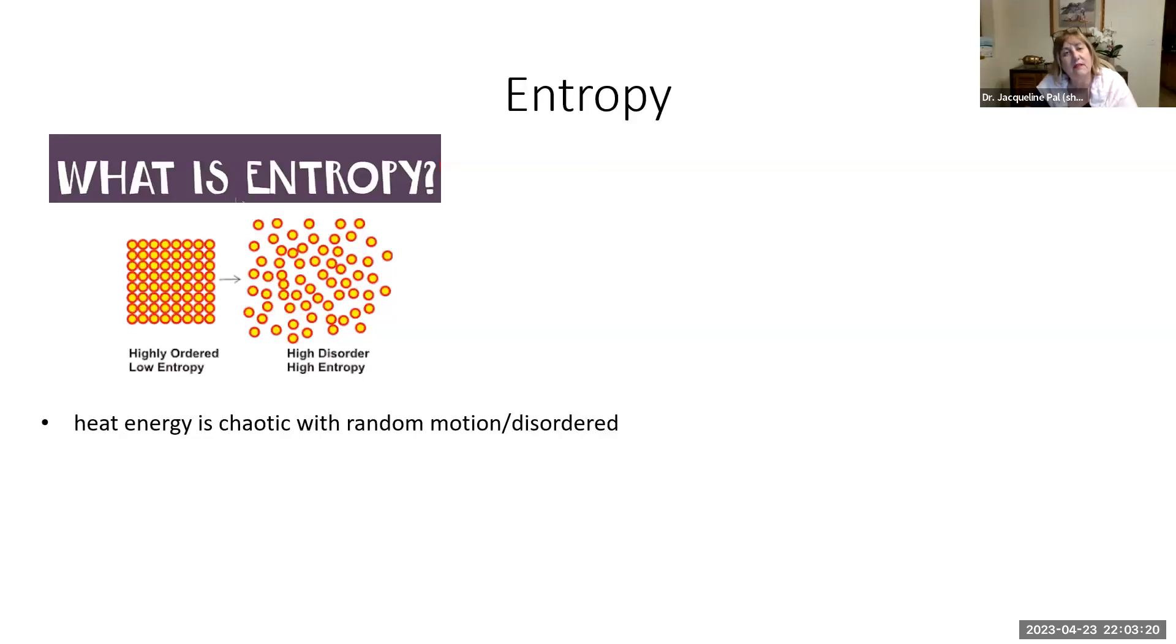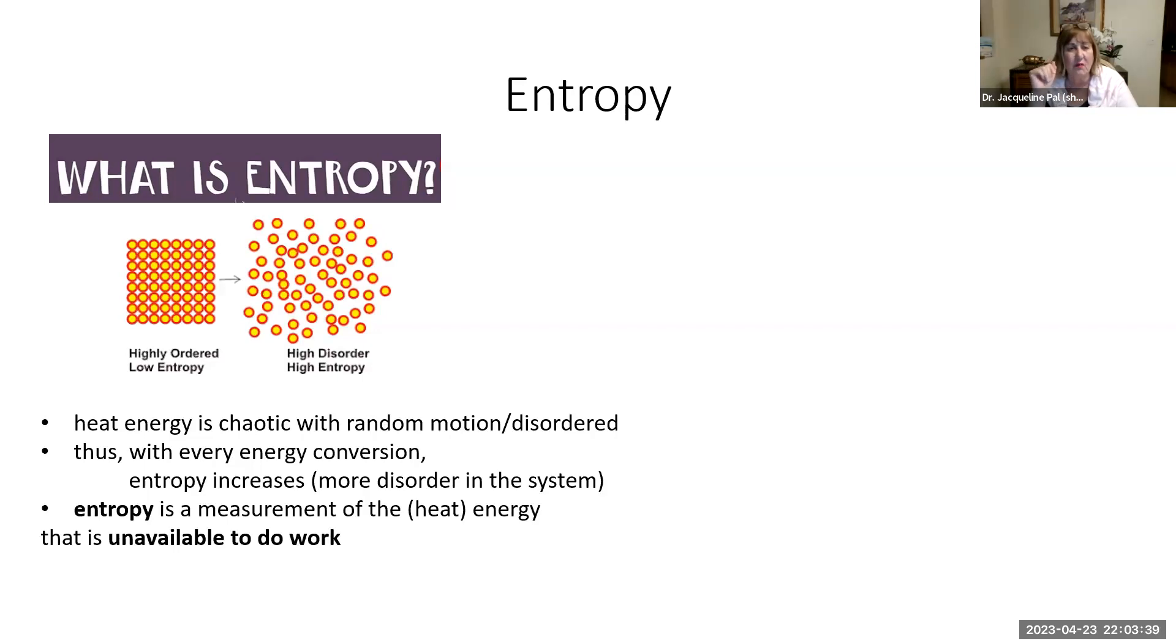So another concept is entropy. So in order to understand entropy, you have to understand that this heat energy is not nice and neat little package. It's very chaotic. It's due to random motions of atoms of molecules. It's very disordered. And so every time we are converting one type of energy to another type of energy, we're generating heat. So we are generating more disorder in the system.